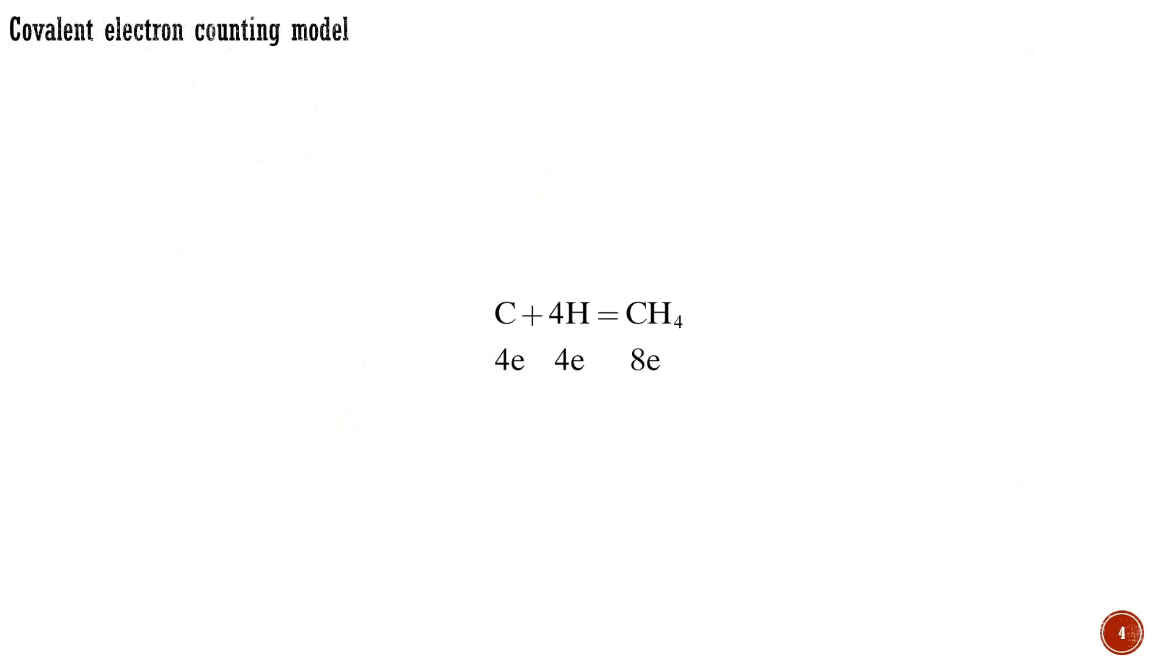We first discuss the covalent electron counting model that is the most appropriate one for compounds with predominant covalency, such as most organometallics. To show how to count valence electrons by forming a compound from the neutral atomic components, we first apply the method to methane, where the simpler octet rule applies. An octet is appropriate for carbon, where one 2s and three 2p orbitals make up the valence shell. Eight electrons fill all four orbitals.